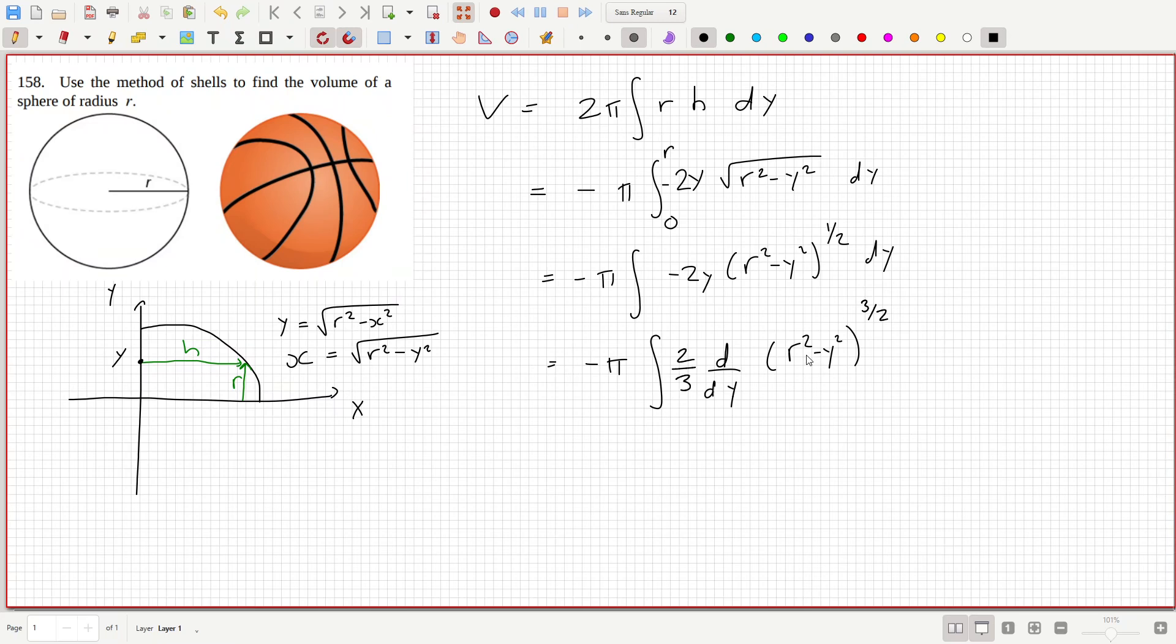The derivative here is r squared minus y squared power one over two times three over two times minus two y, so they cancel and I'd be left with minus two thirds pi.